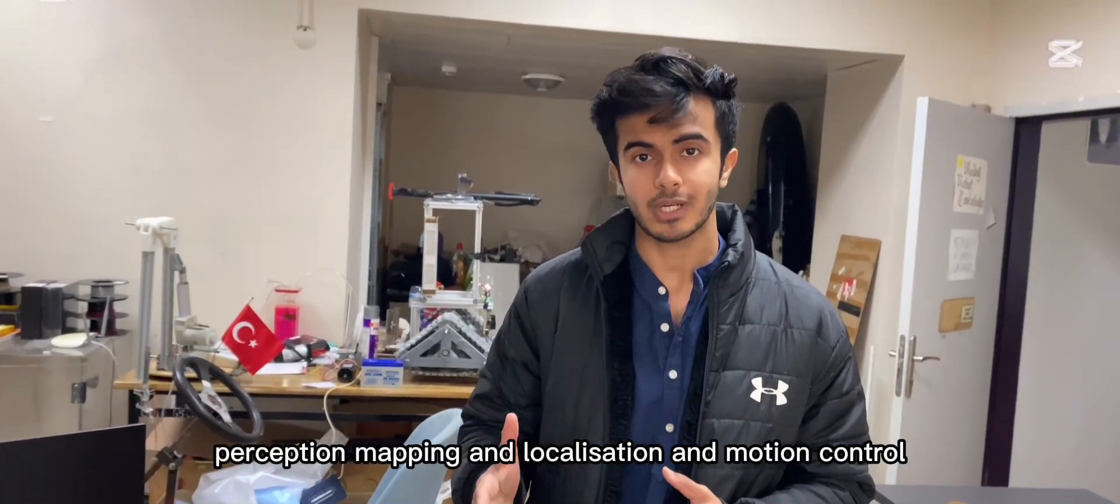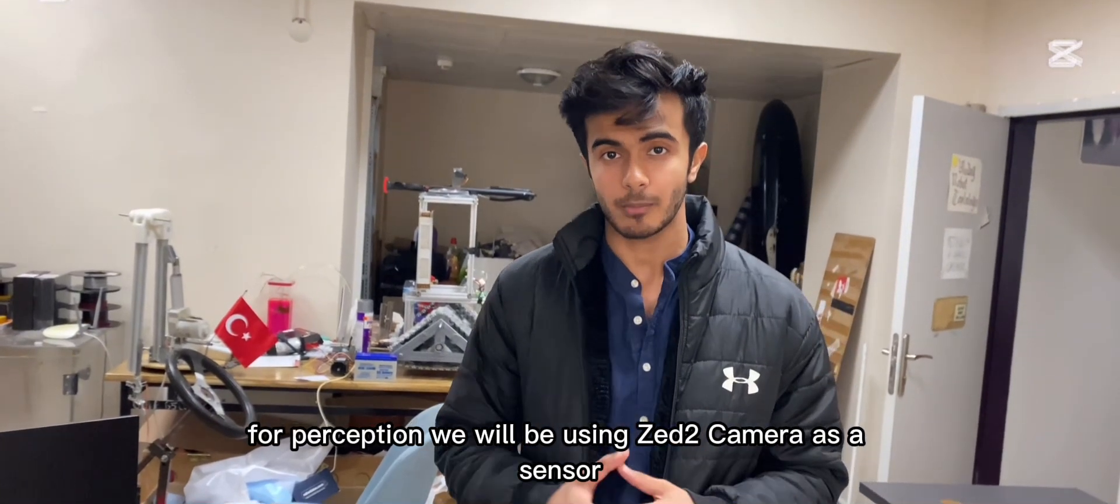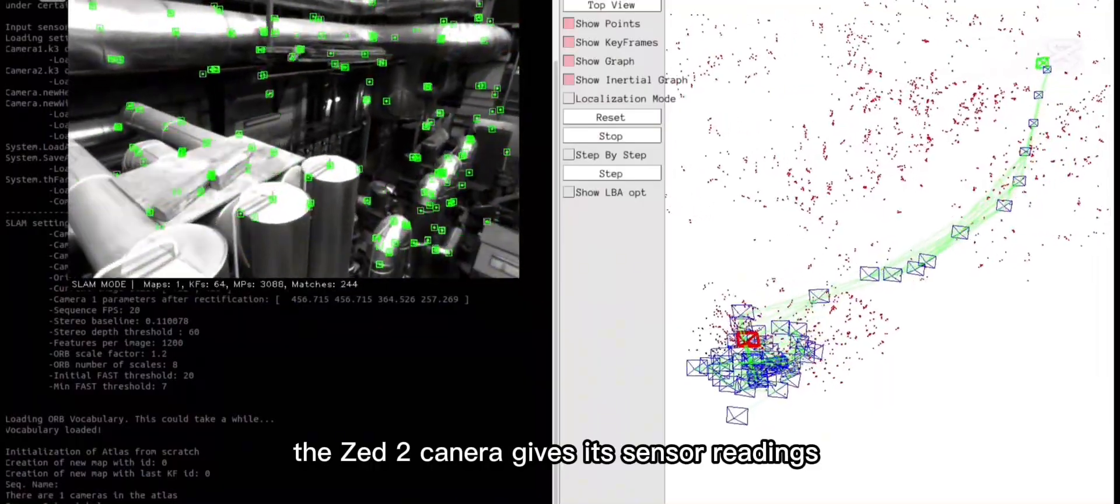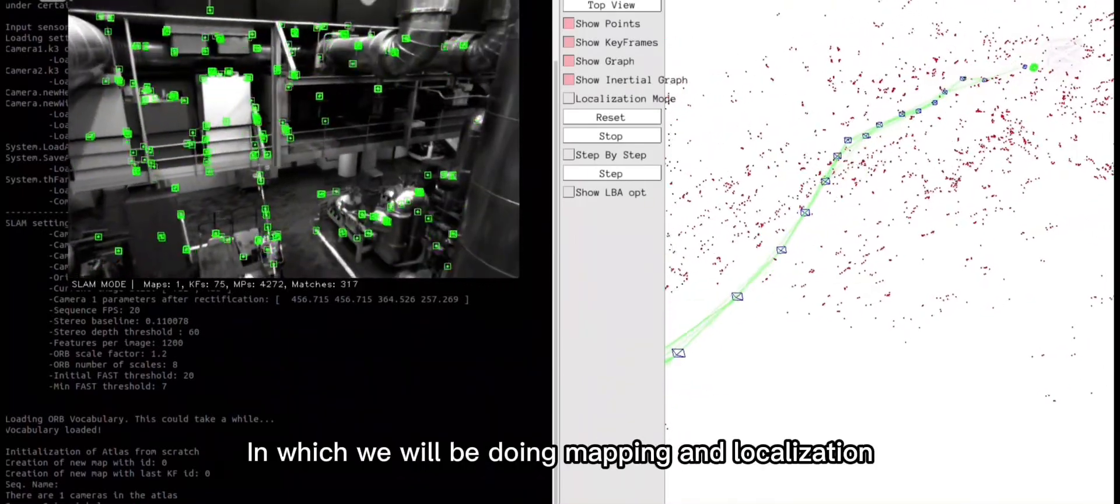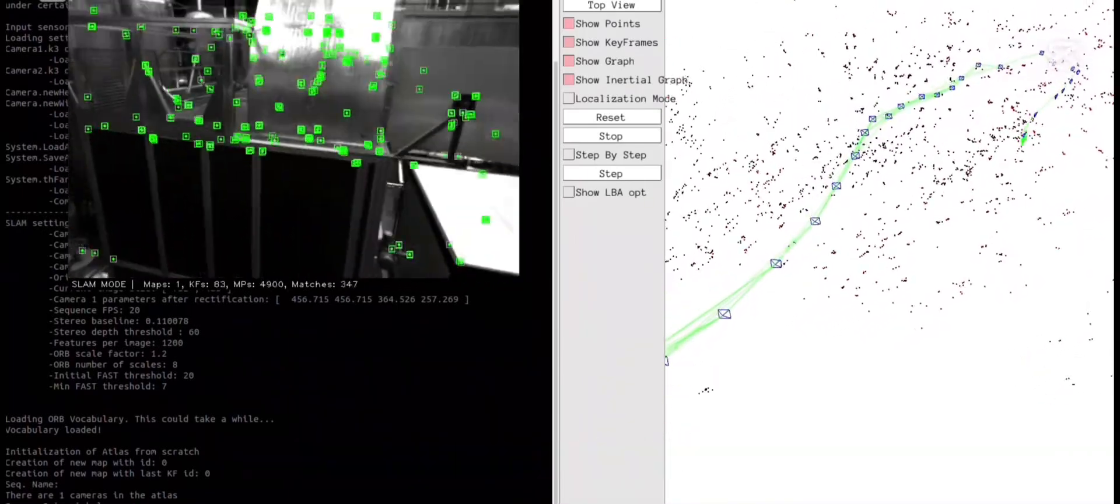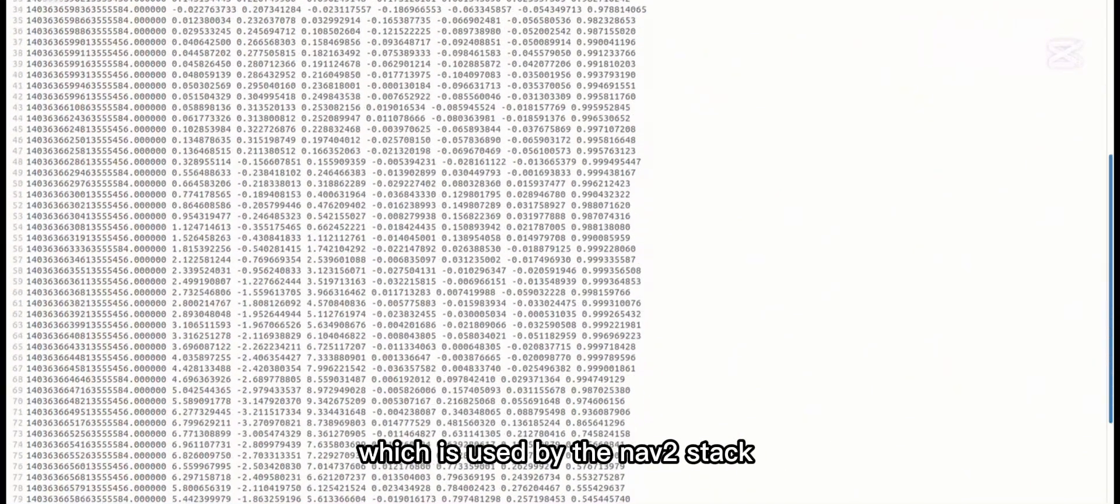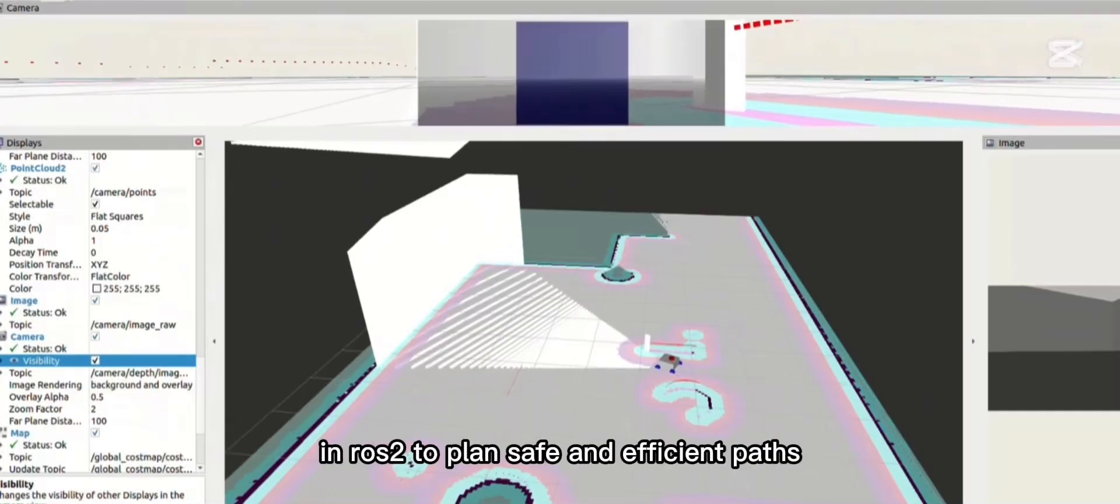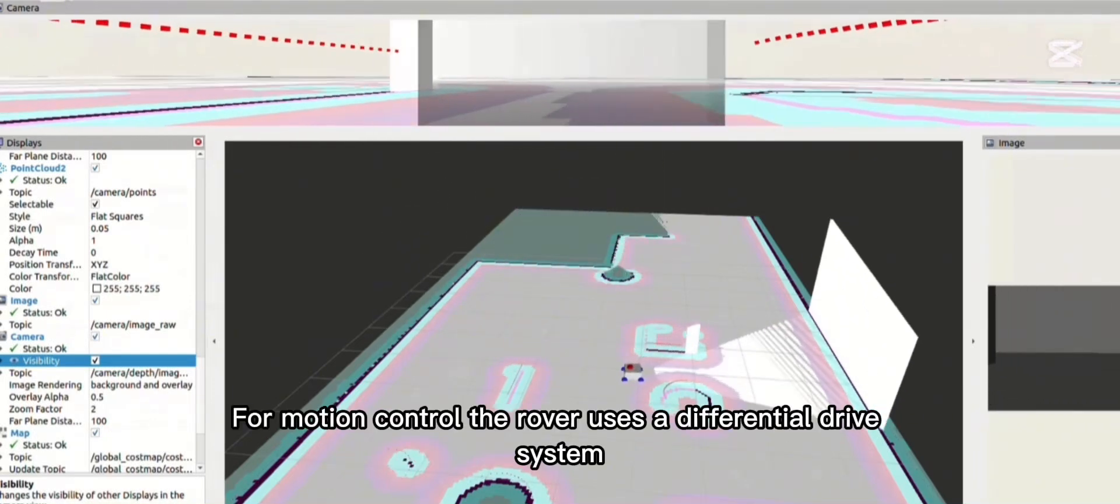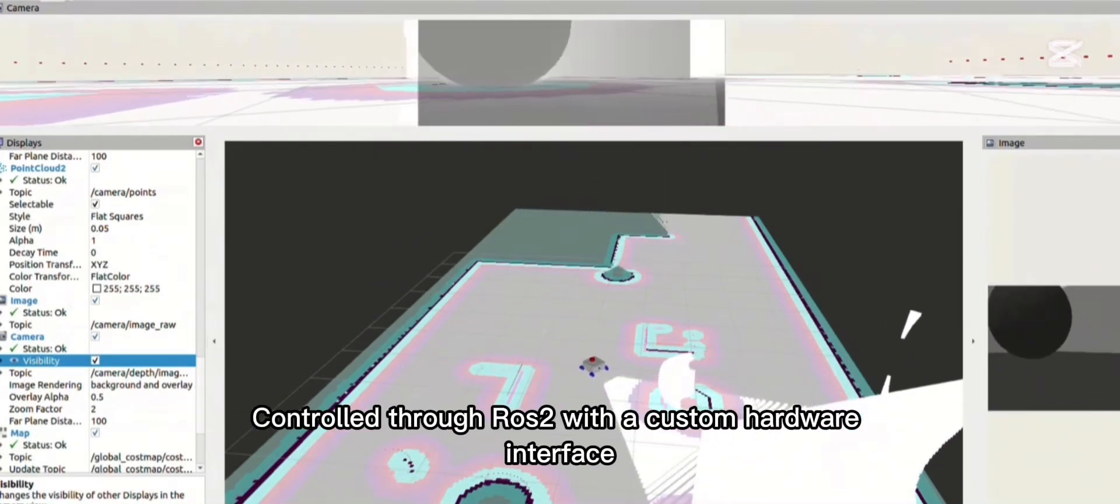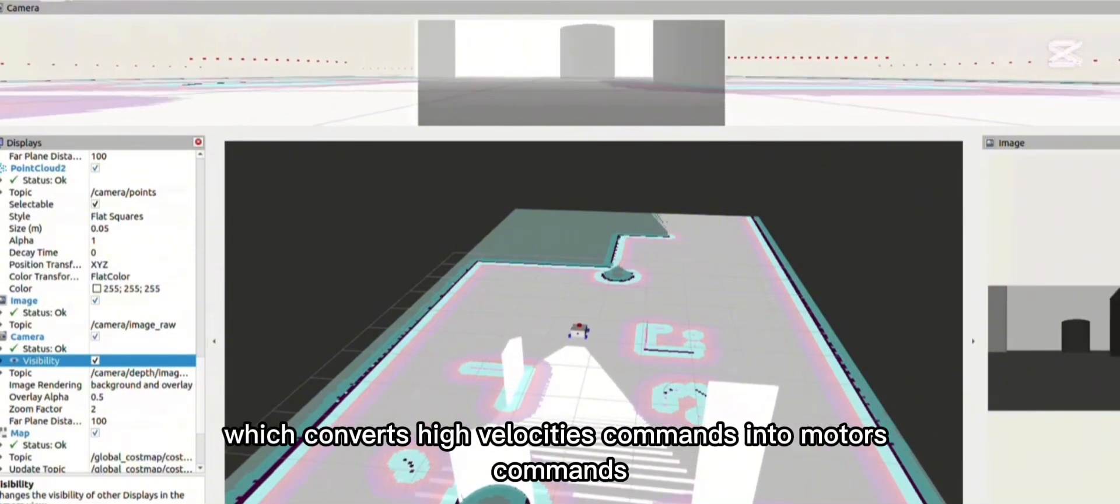Perception, mapping and localization and motion control. For perception, we will be using ZED camera as our sensor. The ZED camera will give its sensor readings as point cloud information to the ORB SLAM 3 in which we will be doing the mapping and localization. The ORB SLAM algorithm will provide keyframes, camera trajectory and map points which is used by the NAV2 stack in ROS2 to plan safe and efficient paths. For motion control, the rover uses a differential drive system controlled through ROS2 with a custom hardware interface. This converts high-level velocity commands into motor commands.